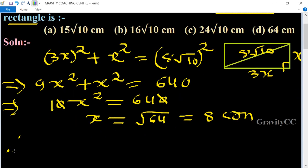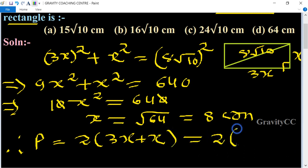Therefore, the perimeter of the rectangle is 2(length + breadth), so 2(3x + x) = 2(4x) = 8 × 8 = 64 centimeters, which is the required answer. So option D is the correct answer.